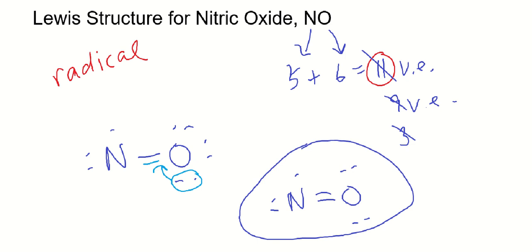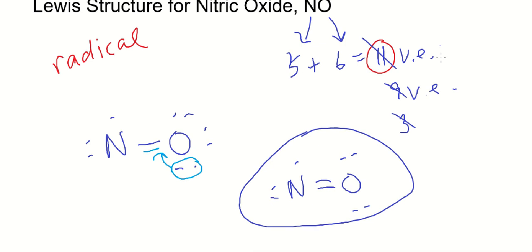You might be wondering, well, why didn't we give nitrogen the octet first? In other words, why don't we have a structure like that?